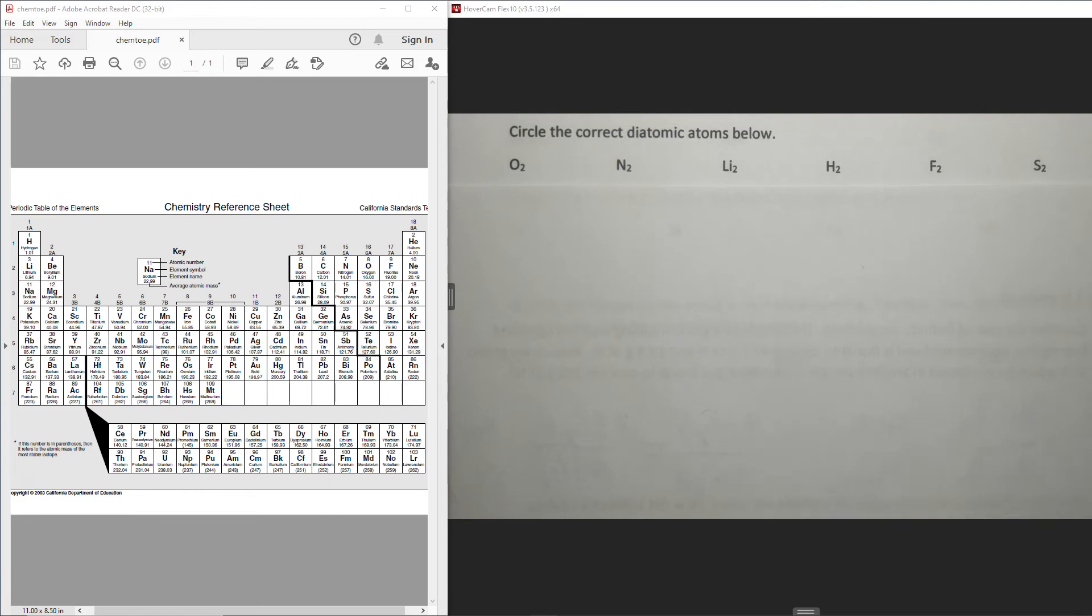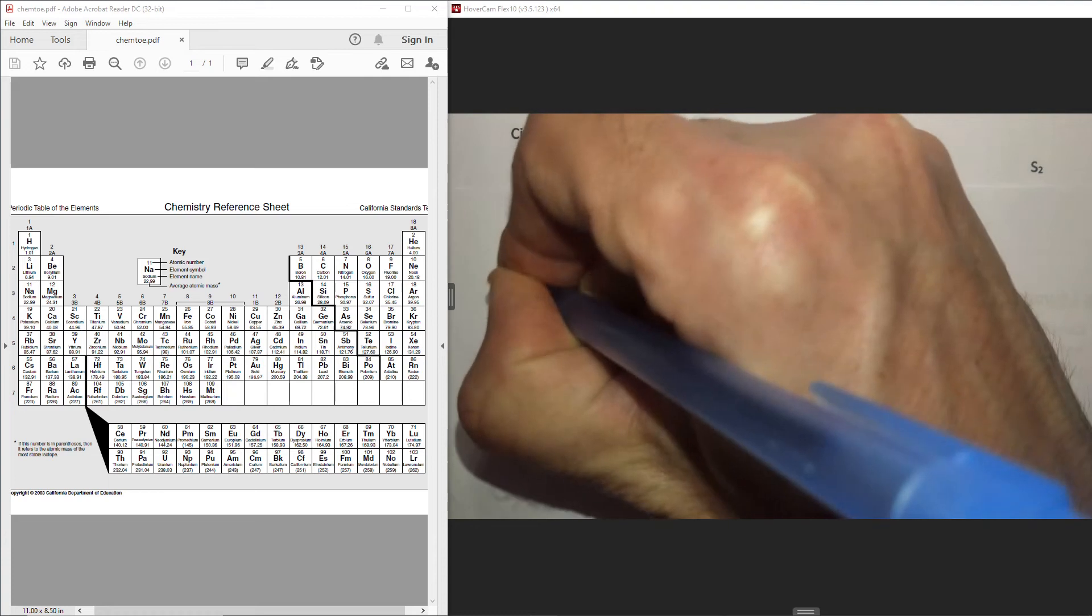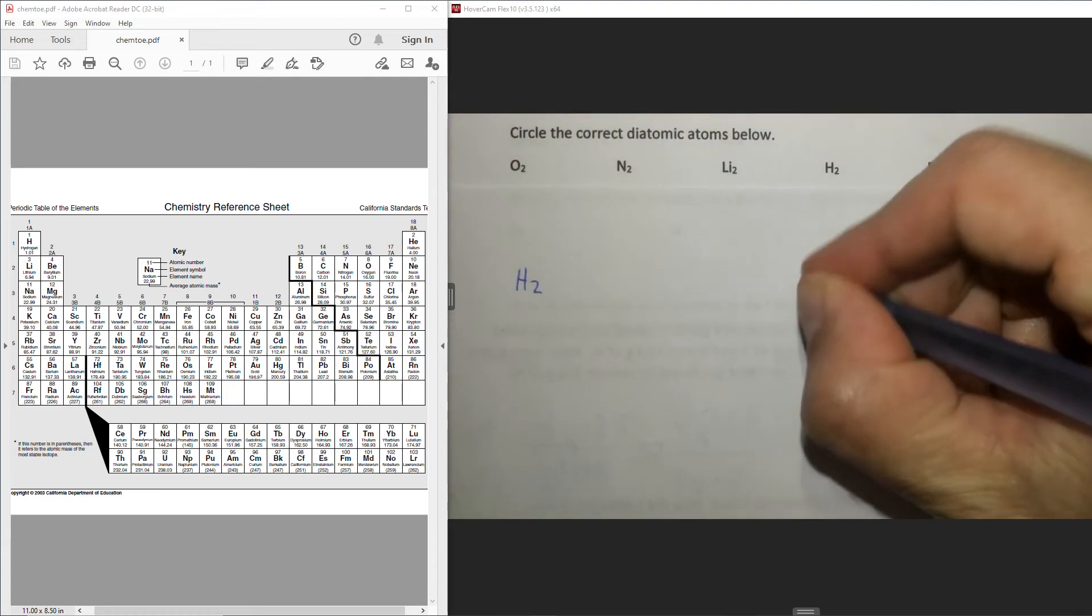But for now, what you need to do is just memorize the seven diatomic atoms. So they are hydrogen, nitrogen,